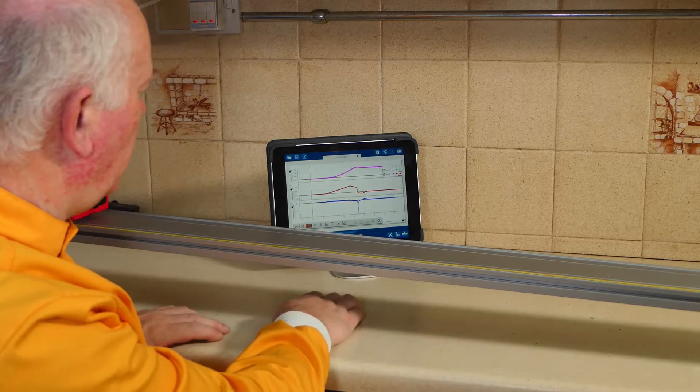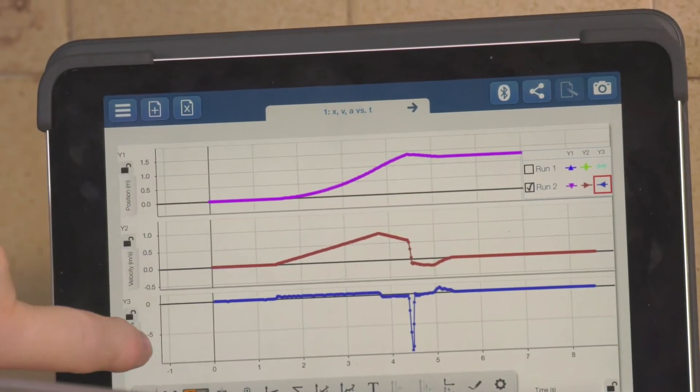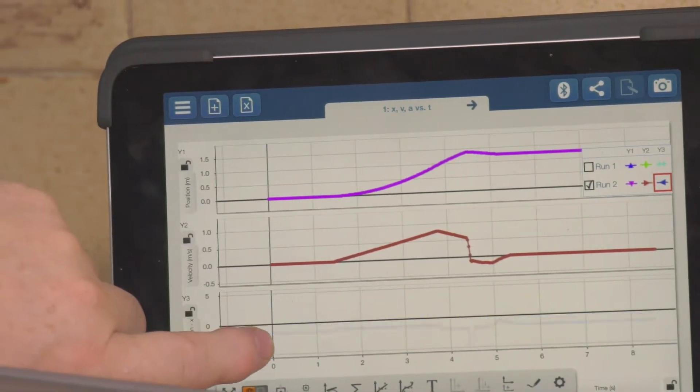And we can see on the graph the distance, the velocity, and the acceleration. Well the acceleration we can't quite see.